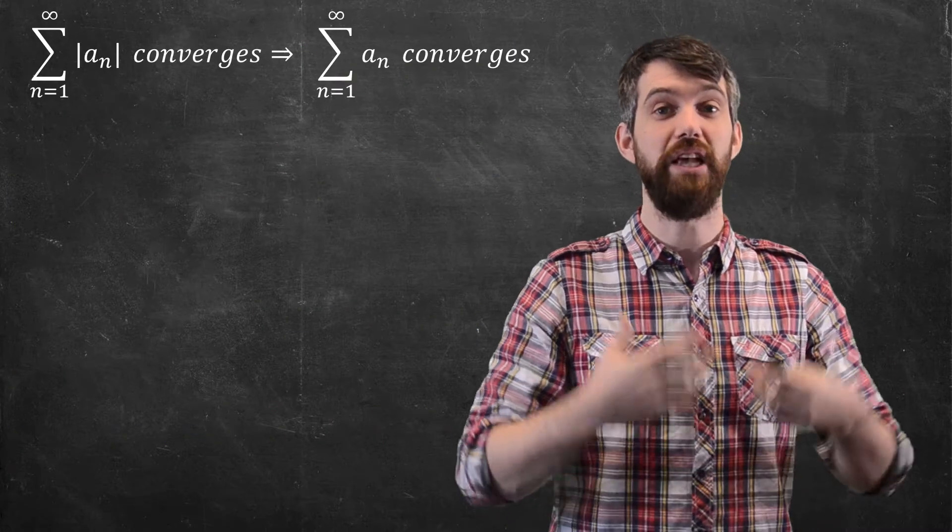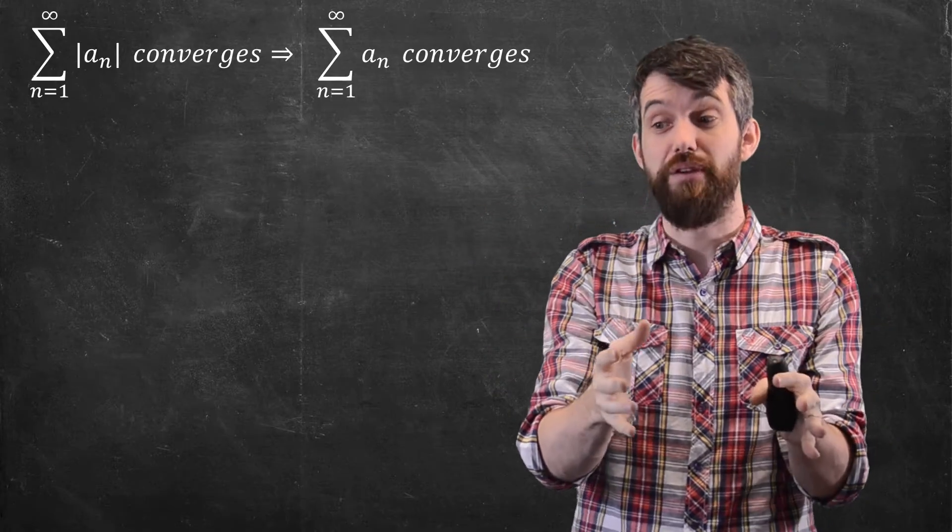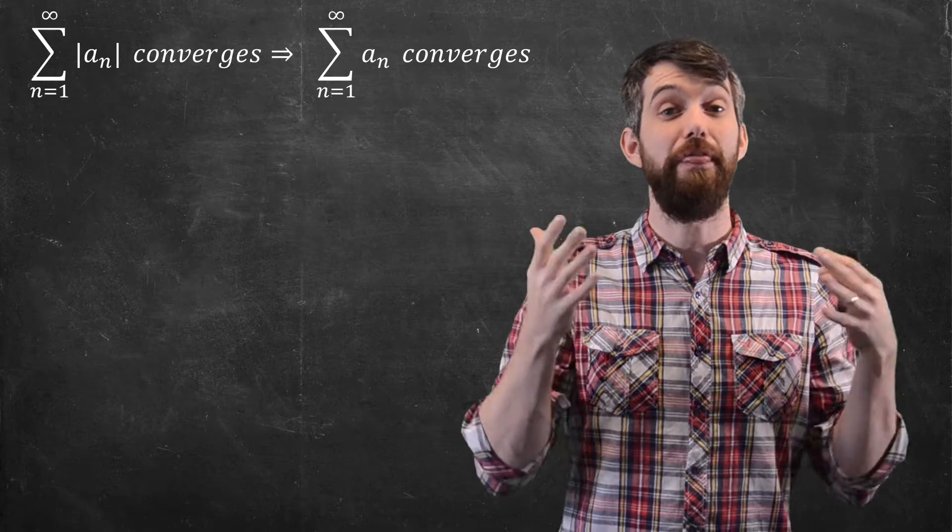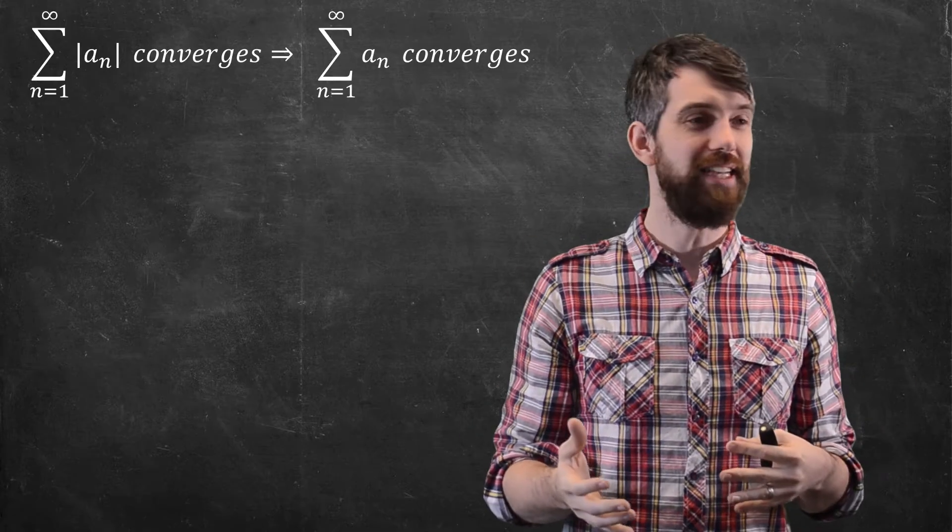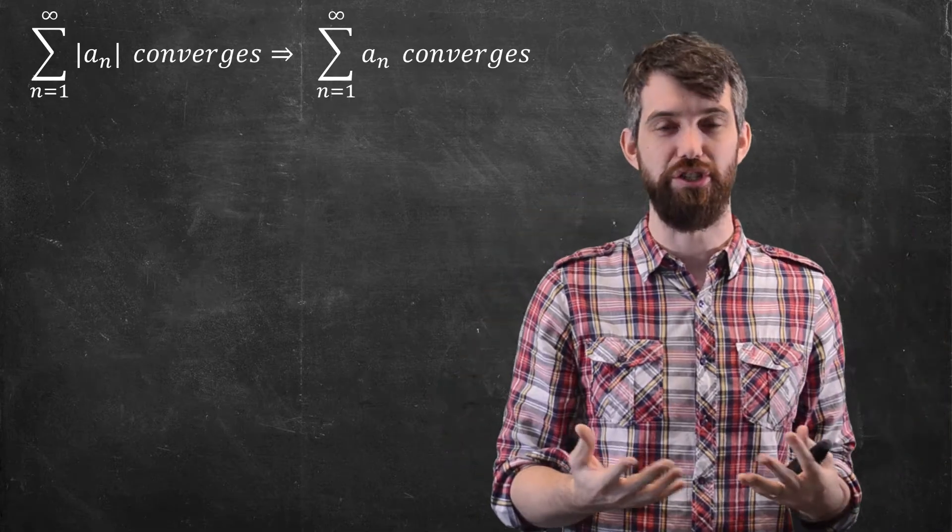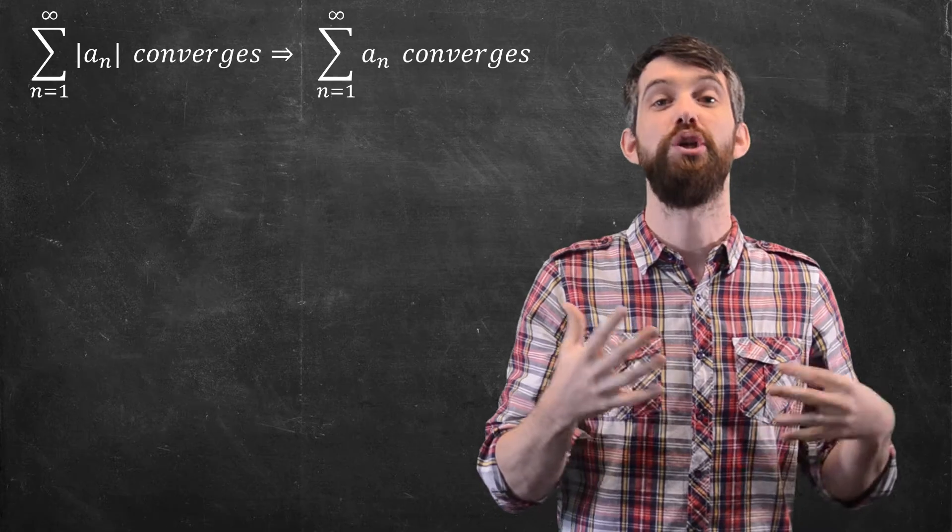So a theorem that we have is that if the sum of the absolute value of the a ns converges, then the original series with just the a ns, that converges as well. It says that when you put this absolute value around it, you have a stronger condition. So when you know it converges with the absolutes there, then it converges without them.